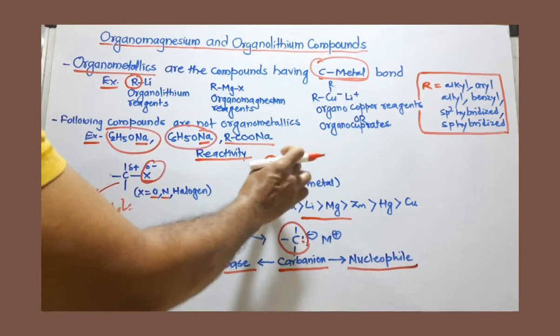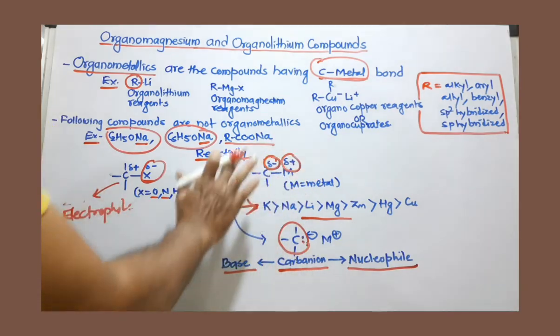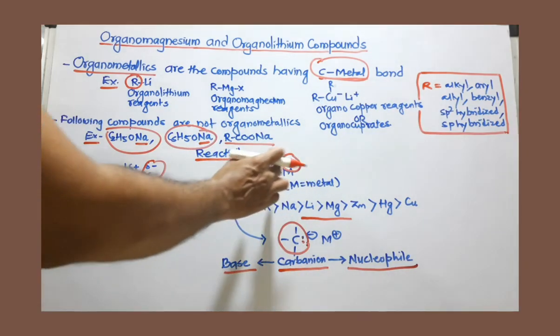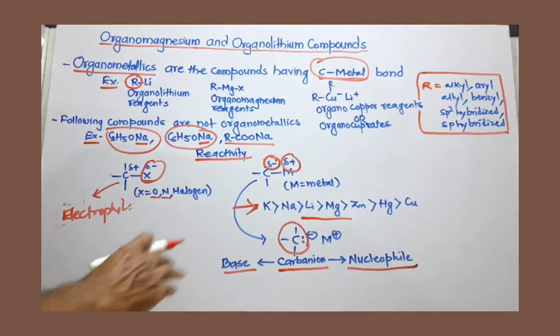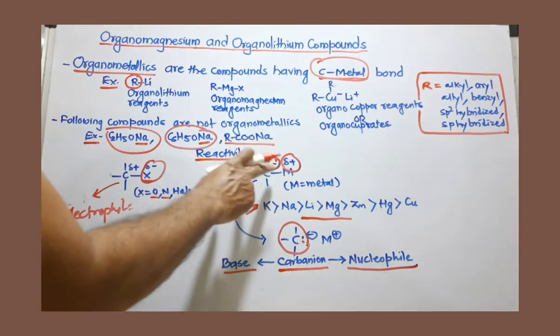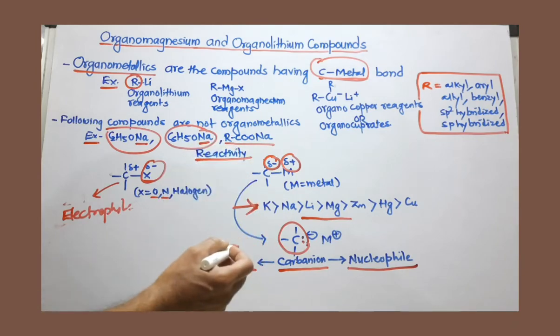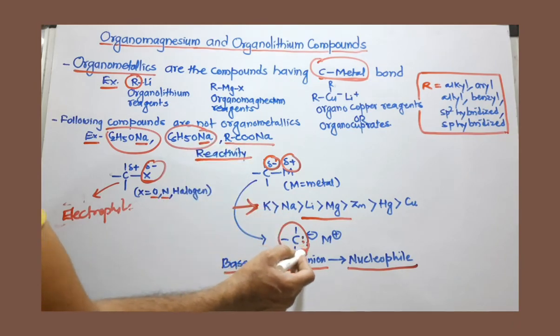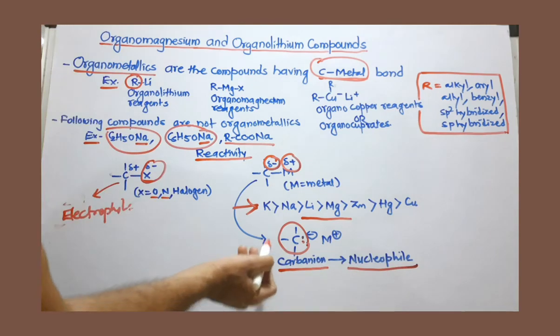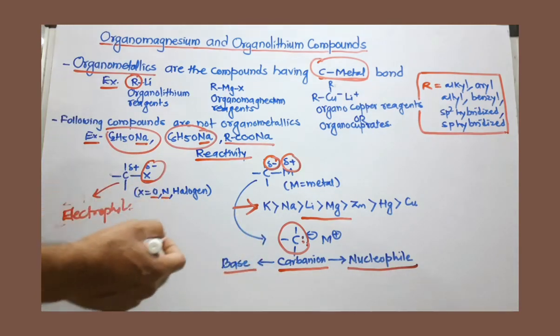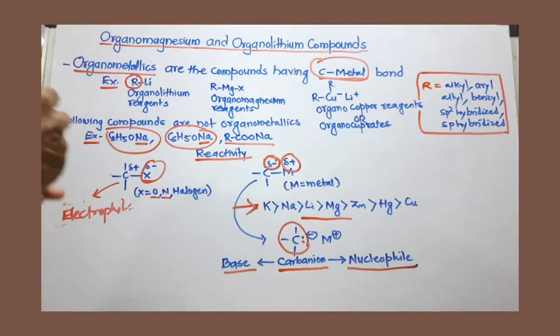So you can see here, when we add metal, when we introduce metal in the organic compound, the polarity is reversed. And because of that, the reactivity of this compound is also reversed. So we must remember that this carbanion can act as a nucleophile as well as base. So we have to utilize this property for certain reactions.